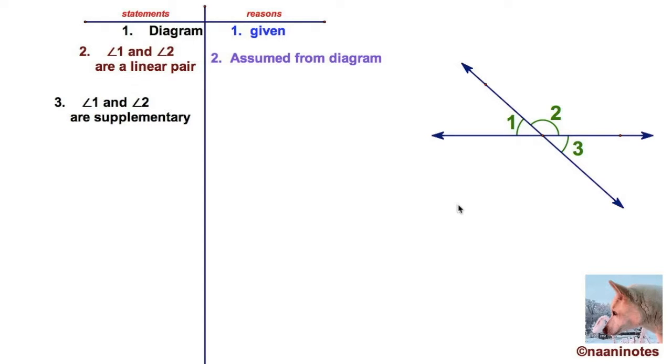Let's see what else we can do with that. If two angles form a linear pair, we have a postulate which says they are supplementary. Those two angles are supplementary because they form a linear pair.